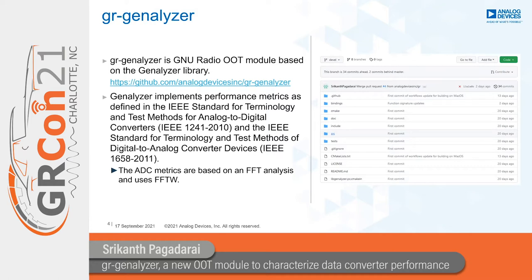In most cases, you have access to the time domain output in finite precision at the output of an ADC, so you need to compute the FFT first before moving on to analysis. Generalizer employs FFTW under the hood to compute the FFT. The terminology and definitions for common performance metrics in GR Generalizer are adopted from the IEEE standard for terminology and test methods for ADCs wherever they are applicable.